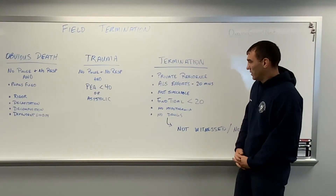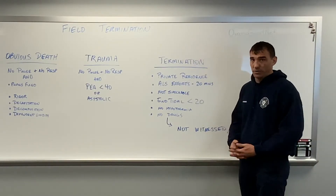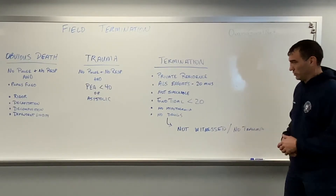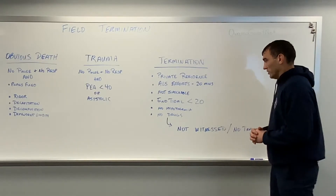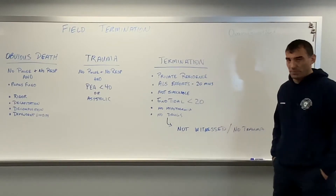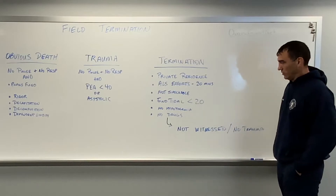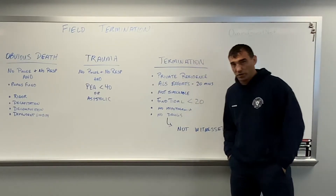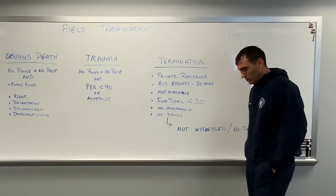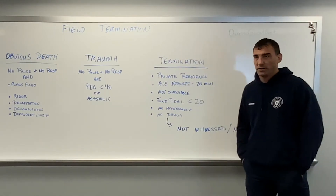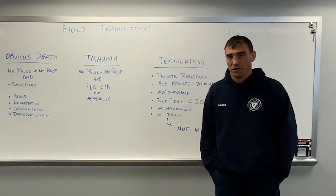Next on the list: not a shockable rhythm. At any time we cannot have had a shockable rhythm. If the patient was in a shockable rhythm and we shocked them, that patient has to be transported. Any time you have a shockable rhythm of any kind — whether we shocked it or not — they have to be transported. If they changed from asystole or PEA into V-fib, even if we missed it, if you saw the switch they have to be transported. Next: end-tidal CO2 less than 20 at the time of termination.